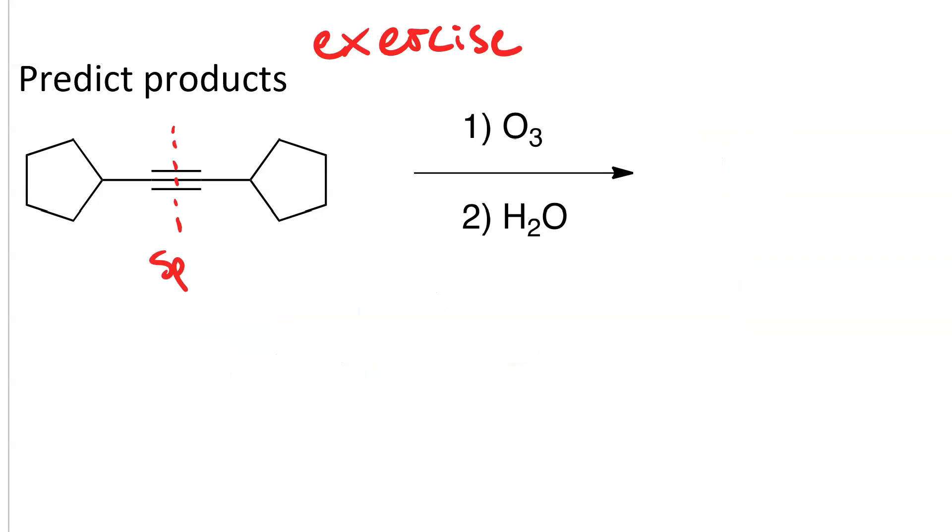Ozonolysis will snip across the pi bonds, and the two pi bonded carbons will become carboxyls. And so we get cyclopentanoic acid from the left-hand fragment and cyclopentanoic acid from the right-hand fragment. They're the same.